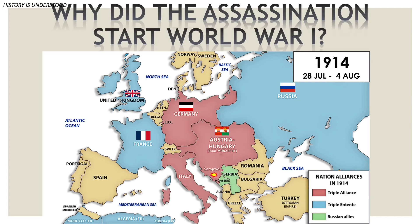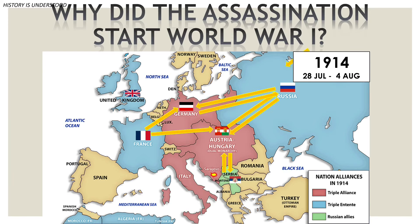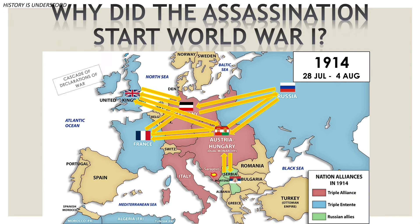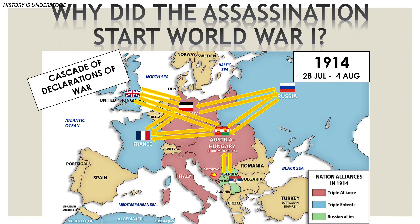When July 28, 1914 fulfills the ultimatum and Austro-Hungary declares war on Serbia, the European powers are gradually forced to declare war on each other. This cascade of declarations of war establishes the two sides facing each other, and this is the start of the First World War.